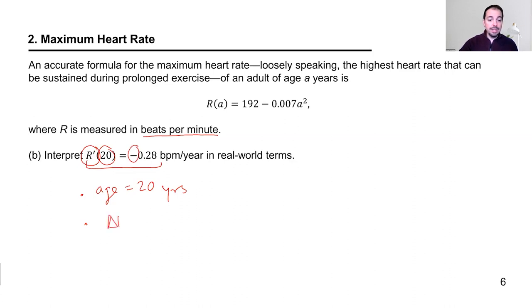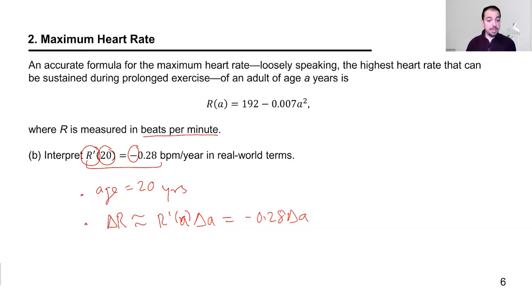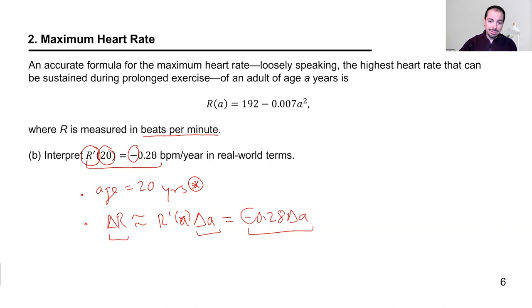Similarly to before, delta R is approximately R prime of A times delta A — in this case, approximately negative 0.28 times delta A. In English: when the adult is 20 years old, if their age changes by a small amount — they age another year or half year — then their maximum heart rate changes by approximately this amount. And since it's negative, their heart rate decreases as they age.